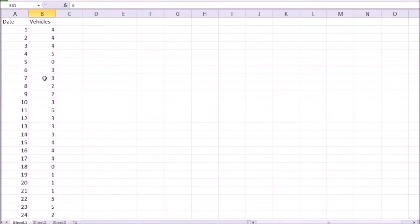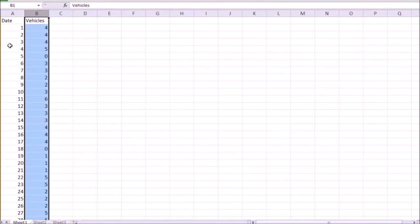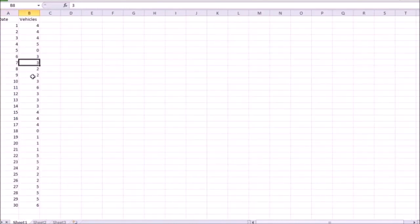First, before we create a dot plot, let's sort this data by the variable of interest. In this case, what I'm interested in is the number of vehicles serviced per day.